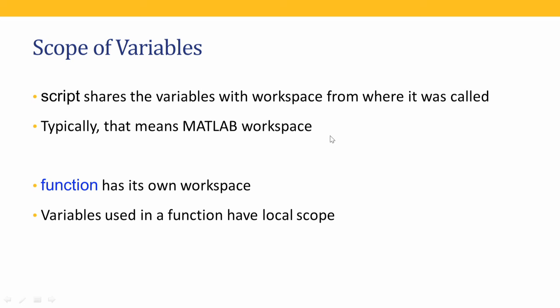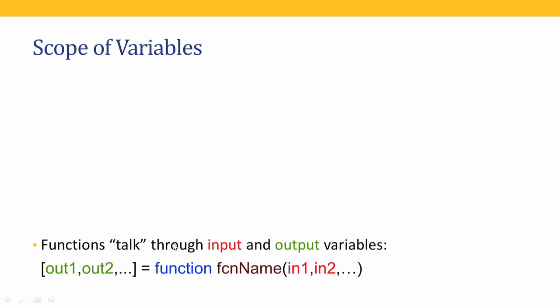This brings us to the concept of variable scoping. A script shares variables with the workspace, whereas a function uses variables in its own workspace — so variables in a function have local scope. The scoping of variables in a script is the same as the calling workspace. Functions communicate with the workspace through input and output variables. Note: there is an error in the syntax shown earlier — the keyword 'function' must come before the equal sign.